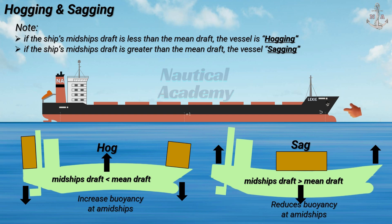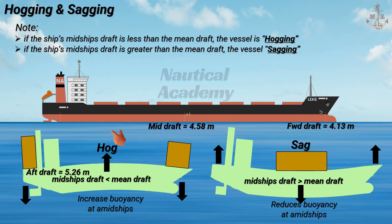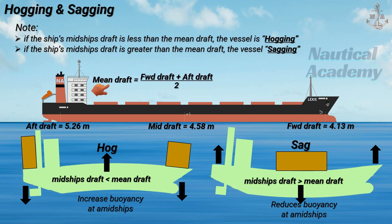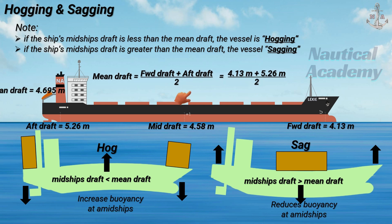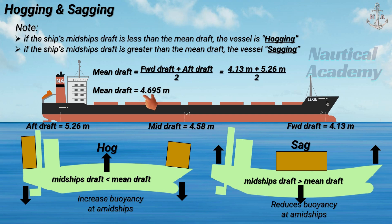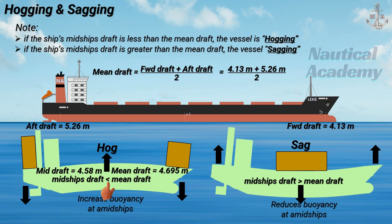Let's have a scenario — assuming we have the ship's forward draft, midship draft, and aft draft. To determine whether the ship is hogging or sagging, let's first calculate the ship's mean draft by adding the forward and aft drafts and dividing the sum by 2. In this case, the mean draft is 4.695 meters. Comparing it to the midship draft of 4.58 meters, the midship draft is less than the mean draft, so the ship is hogging.